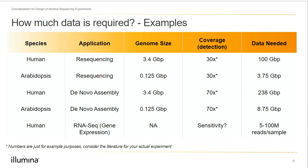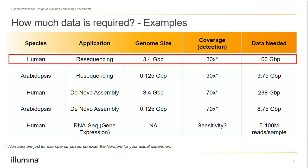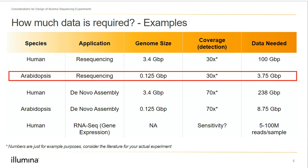For a human resequencing experiment looking at germline variants, we would need somewhere between 10 to 30x coverage — let's use 30x. The human genome is 3.4 gigabases, so multiplying by 30x coverage, we'll need approximately 100 gigabases of data. For comparison, the same type of experiment with Arabidopsis — since the genome is much smaller at only about 0.125 gigabases — we only need about 3.75 gigabases of data for the same type of experiment.